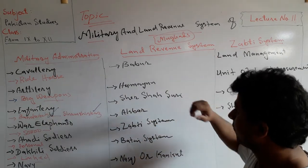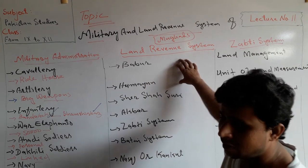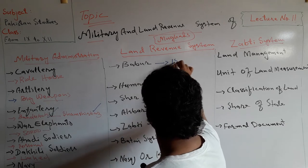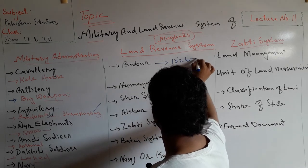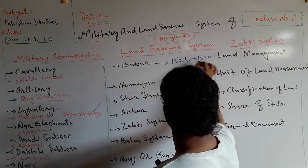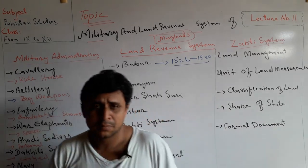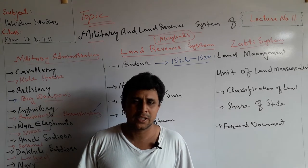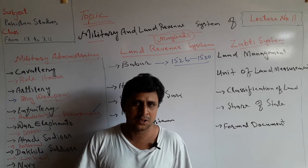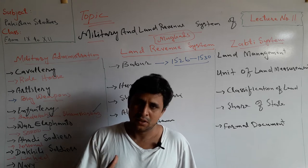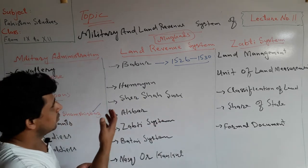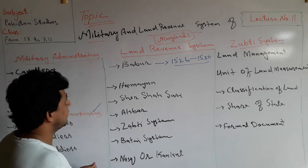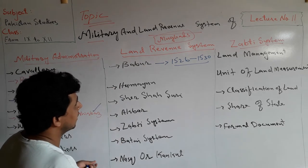Regarding the land revenue system: when Babur occupied the Delhi throne in 1526, he died in 1530. In those four years, he had little time to consolidate his empire or introduce good policies. So when Babur occupied the throne, he distributed his empire among Jagirdars.